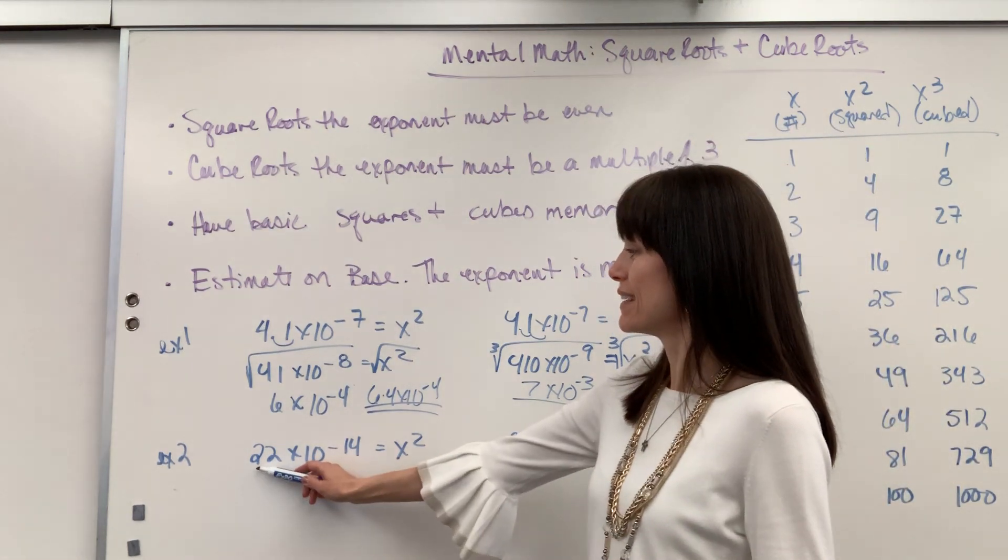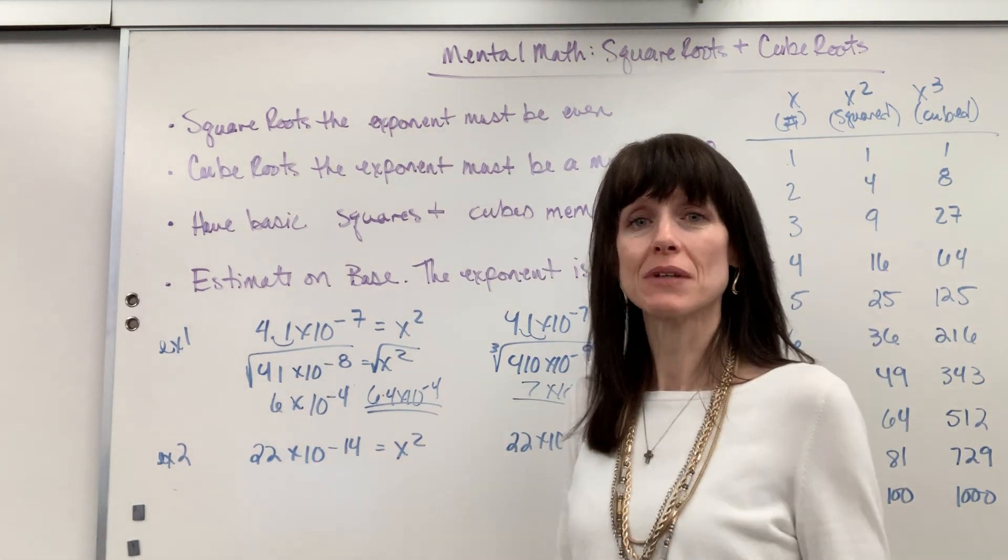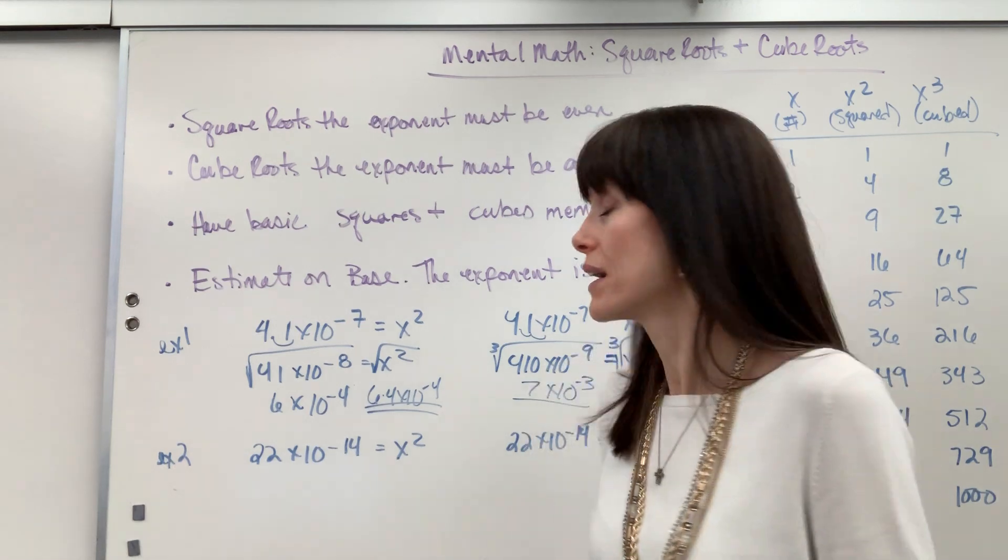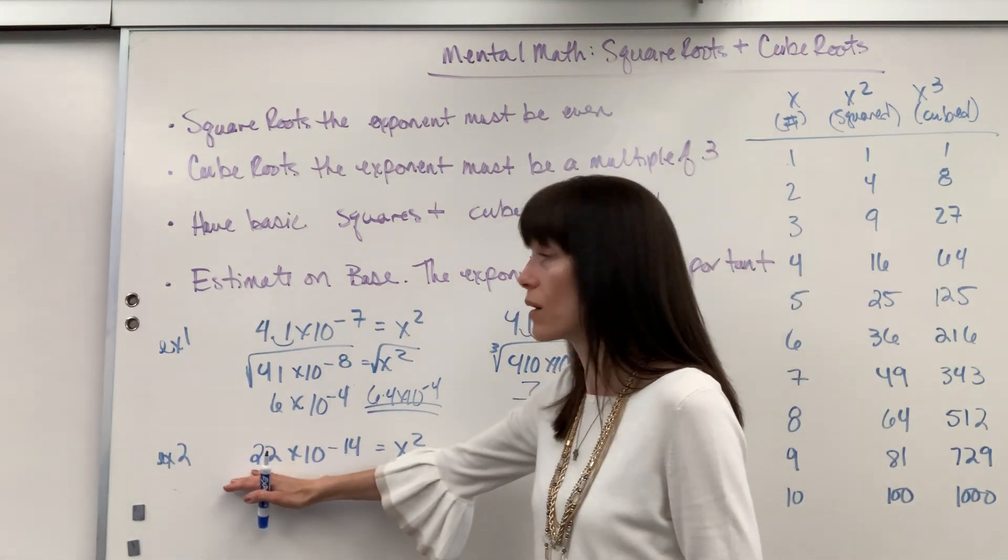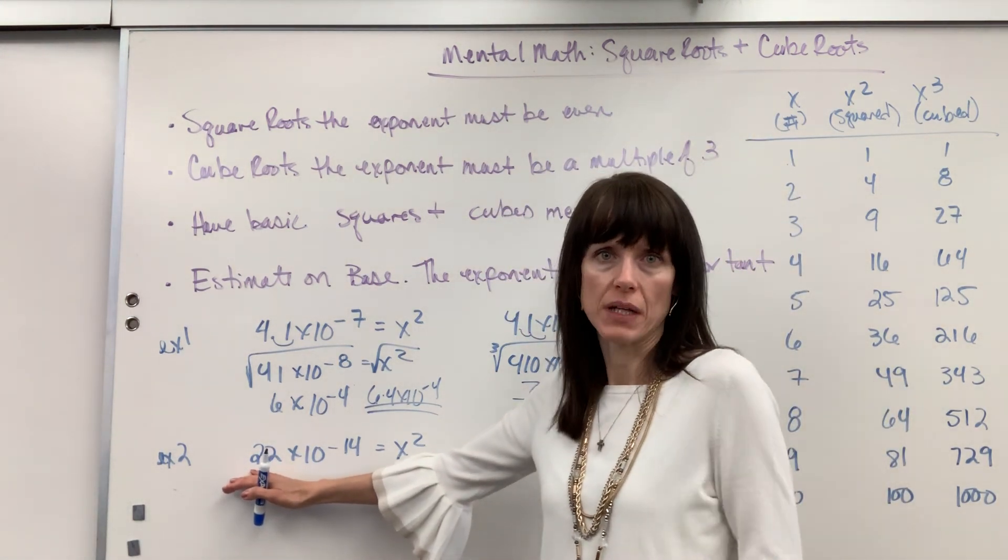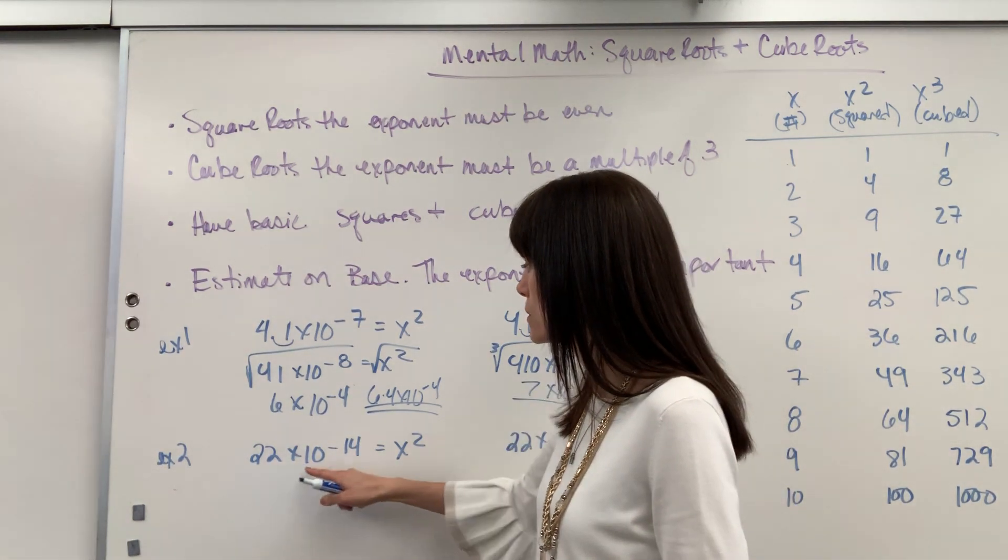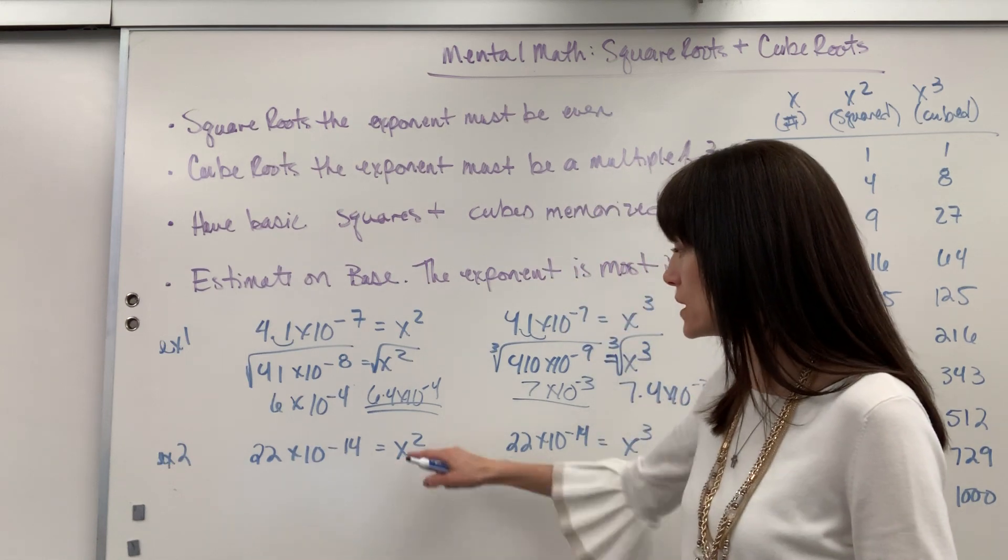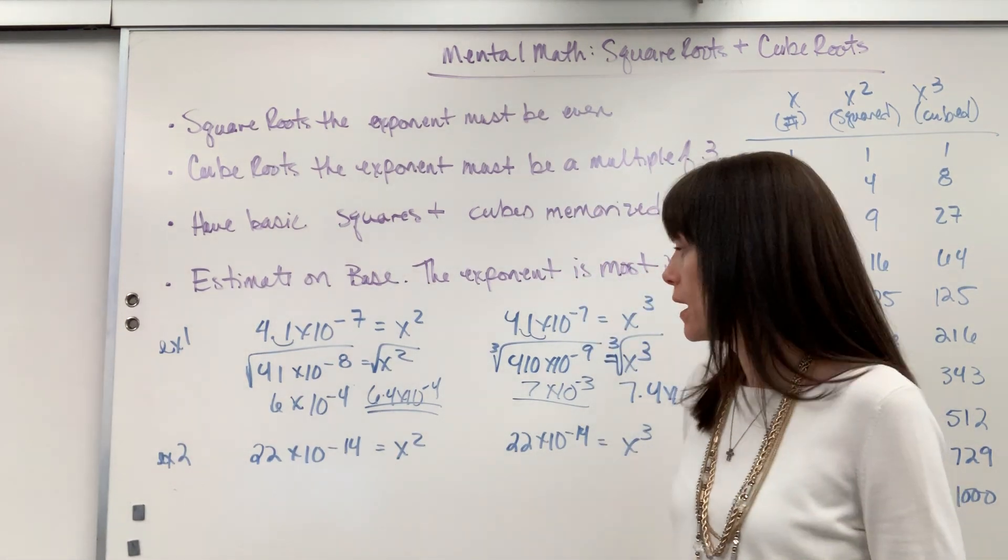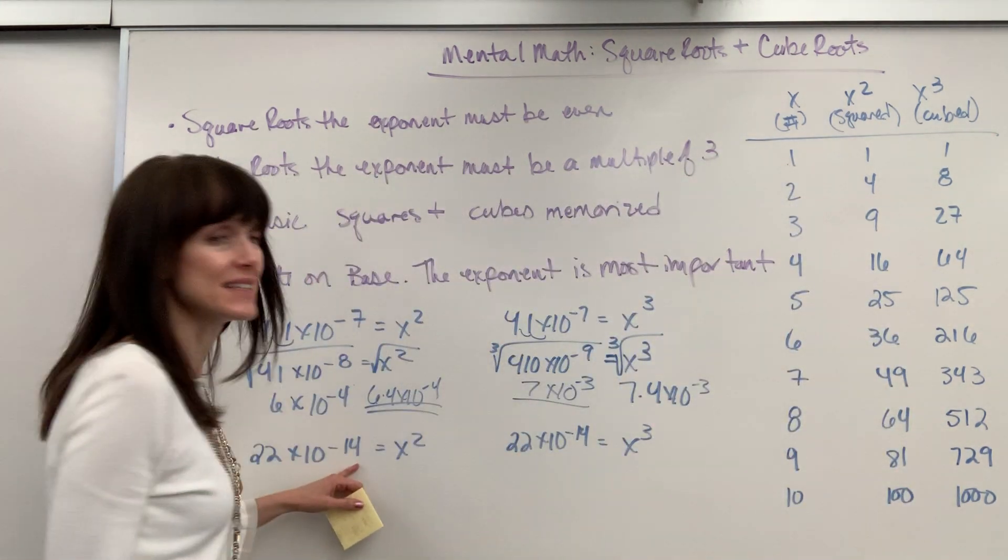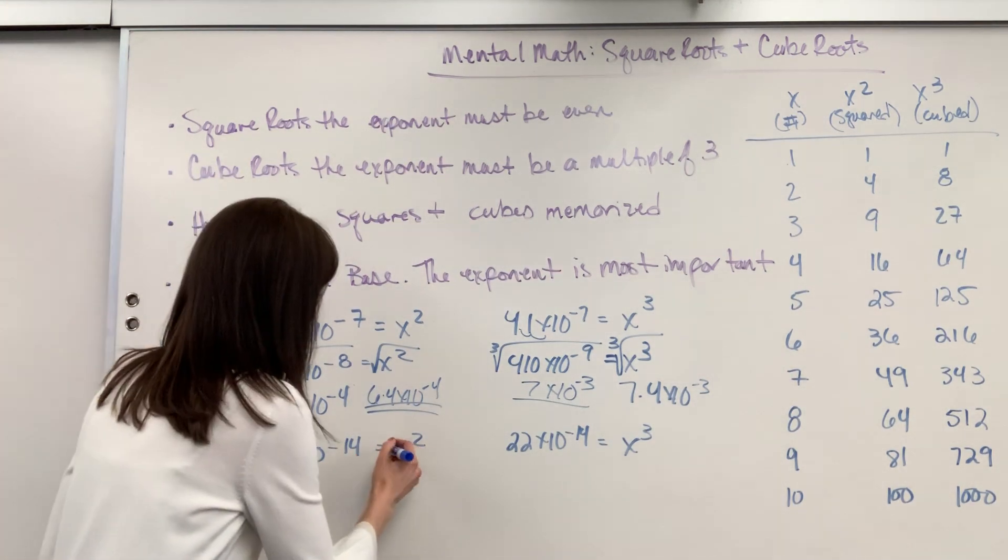Let's do another example. Now I did a 10s place here at 22, because sometimes when you're doing your mental math, you're going to end up with something other than a 1s place. It's fine, not a big deal. Remember, you're focusing on that exponent. So I'm going to have 22 × 10^-14 = x².